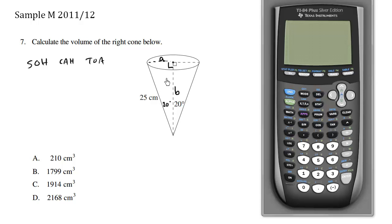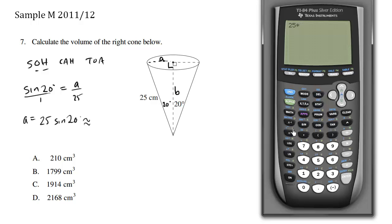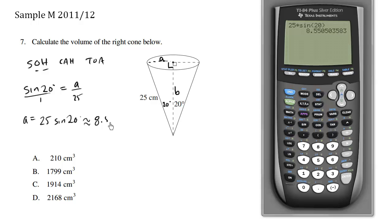Looking at 20 degrees, we're interested in A which is the opposite side, and we know the hypotenuse. So sine 20° equals opposite over hypotenuse, which is A over 25. Multiplying both sides by 25, A equals 25 sine 20°, which is approximately 8.55 centimeters. Make sure you're in degree mode.